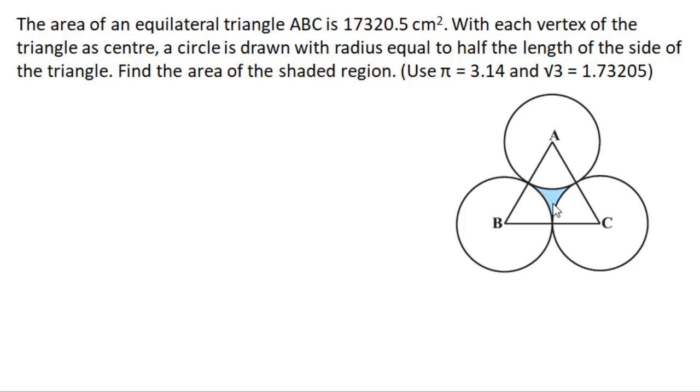The shaded area equals this area minus these three sectors. I will highlight the three sectors: one sector, the second one, and the third one. But first, you need to find the length of this equilateral triangle. For that, we need a formula: the area of an equilateral triangle.